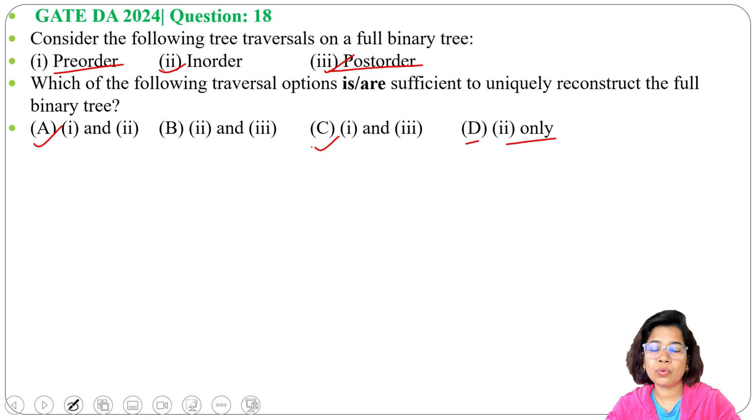Then option D: 2 only, in-order only. This is false. We need at least two traversals. So here, the answer will be option A, option B, and option C.